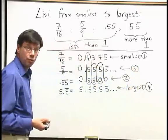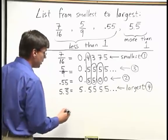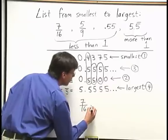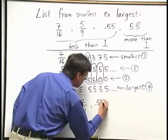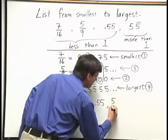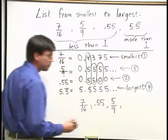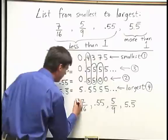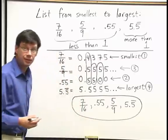Now let's write our original numbers in order from smallest to largest. First comes 7 sixteenths, then 0.55, then 5 ninths, and finally 5.5 bar. There we have all four numbers in order from smallest to largest.